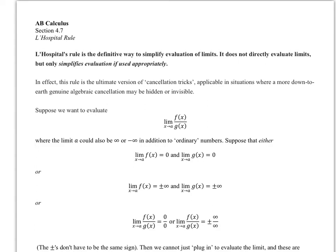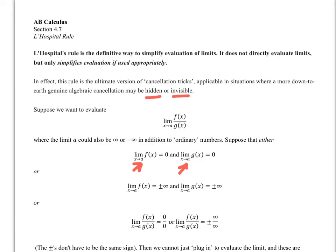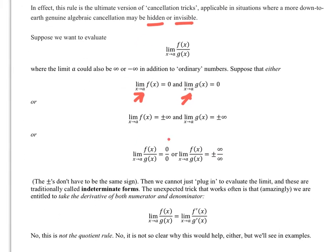The first thing we always do with limits is plug in the limit value — direct substitution followed by some kind of factoring or conjugation. If that cancellation is hidden or somehow invisible, we use L'Hopital's Rule in certain scenarios. The two scenarios are if we get 0 over 0 when we do a direct substitution, or infinity over infinity.